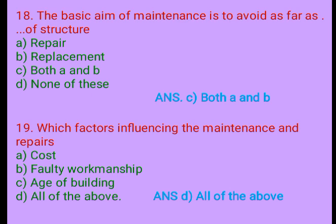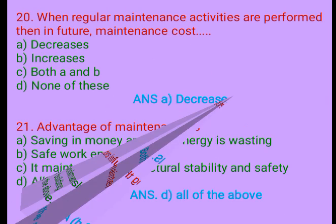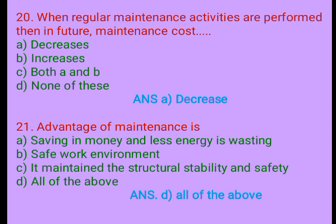Question 19. Which factors influence maintenance and repair? A. Cost, B. Faulty workmanship, C. Age of building, D. All of the above. Answer: D. All of the above. Question 20. When regular maintenance activities are performed, then future maintenance cost: A. Decreases, B. Increases, C. Both A and B, D. None of these. Answer: A. Decreases.